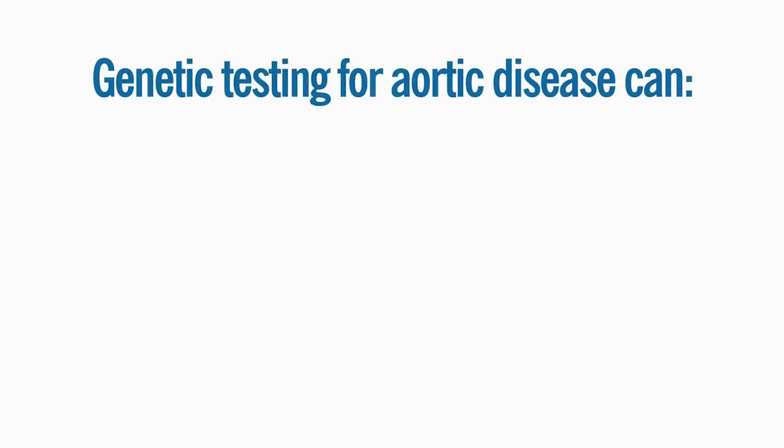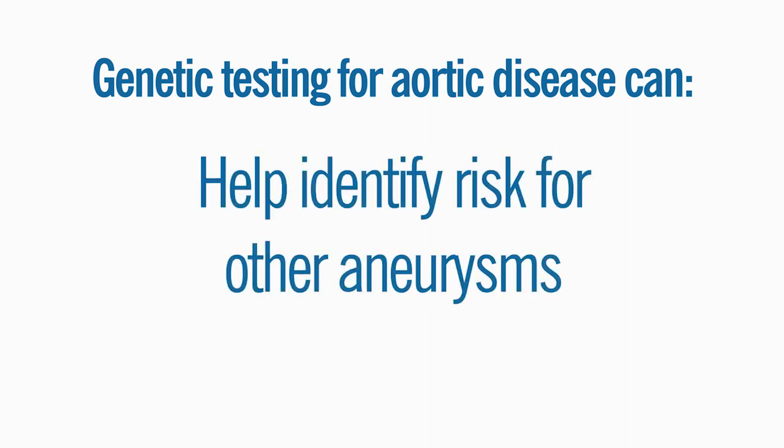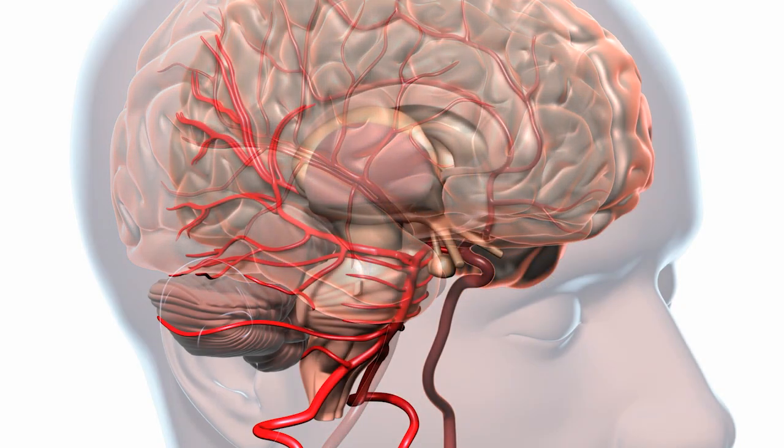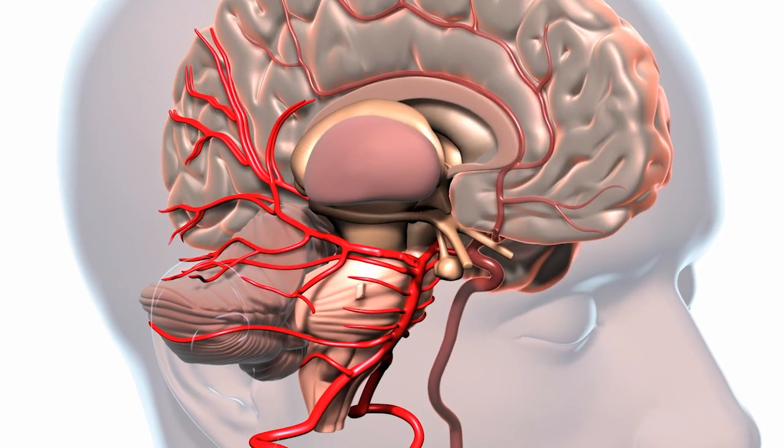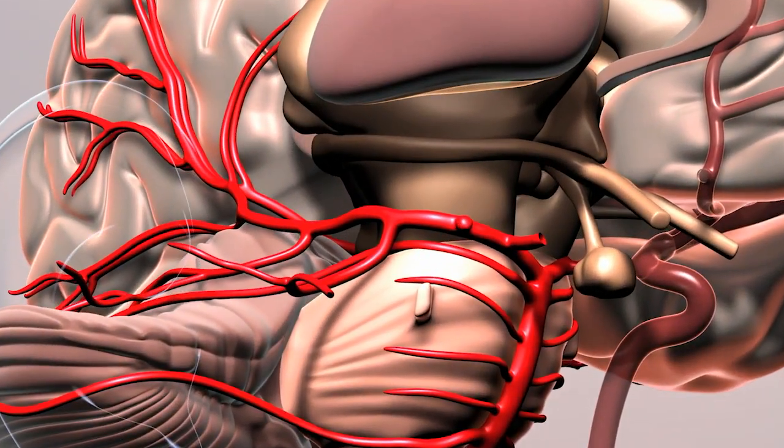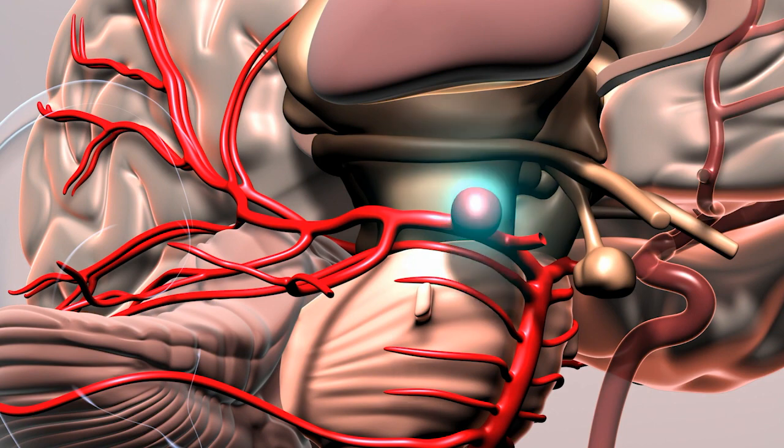Genetic testing for individuals with aortic disease can help identify risk for other aneurysms. Some of the genetic causes of aortic aneurysms also increase the risk for other aneurysms, including in the brain. If such a gene mutation is found, your healthcare providers can recommend screening to determine if any further treatment is needed.